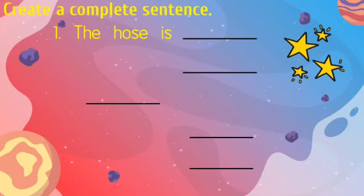Miss Nita chooses long. So my sentence will be: the hose is long. Try yours. The second we have: the rose is blank. It could be red, pretty, big, small, or something else. But Miss Nita will choose red. So my sentence will be: the rose is red.